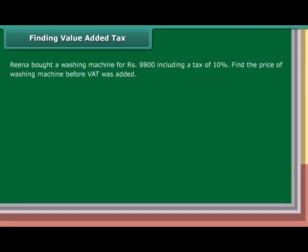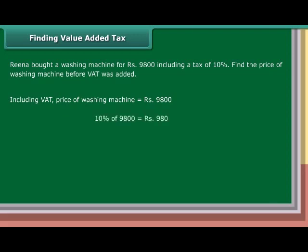Rina bought a washing machine for Rs. 9,800, including a VAT of 10%. Find the price of the washing machine before VAT was added. Including VAT, price equals Rs. 9,800. 10% of Rs. 9,800 equals Rs. 980. Price before VAT was added equals Rs. 9,800 minus Rs. 980, which equals Rs. 8,820.